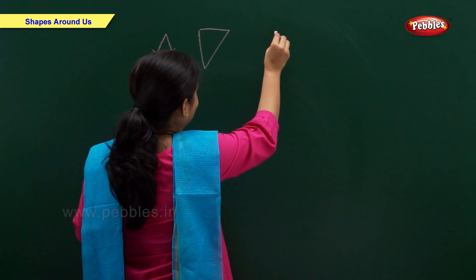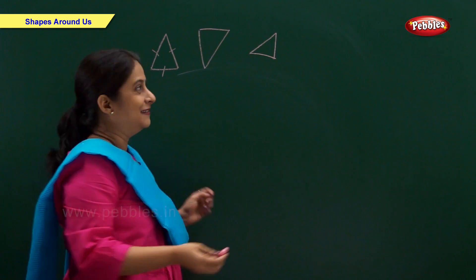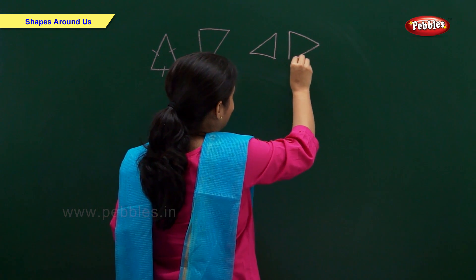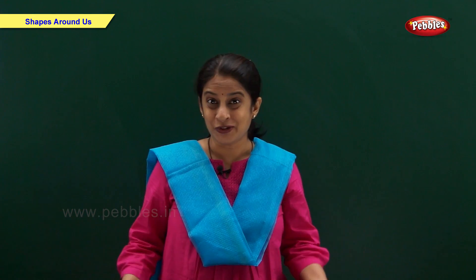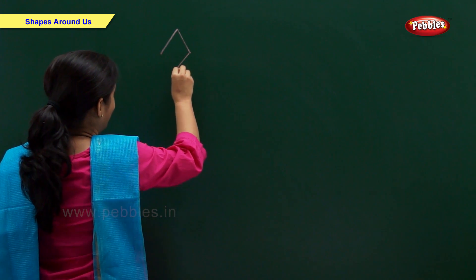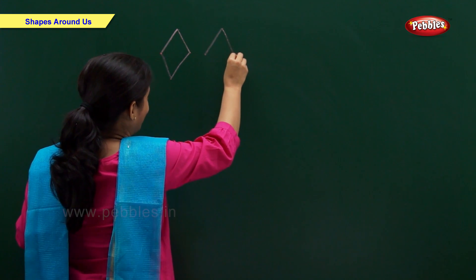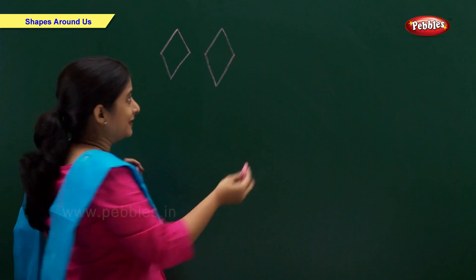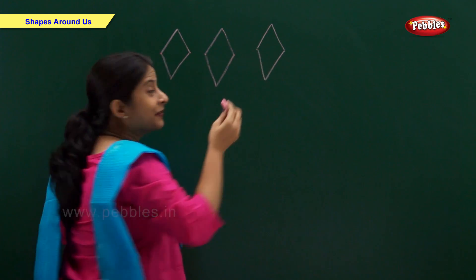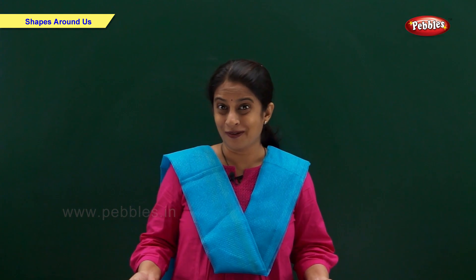Triangle, triangle. Now let's draw a diamond. Diamond. You know friends, the shape of a kite is like a diamond.